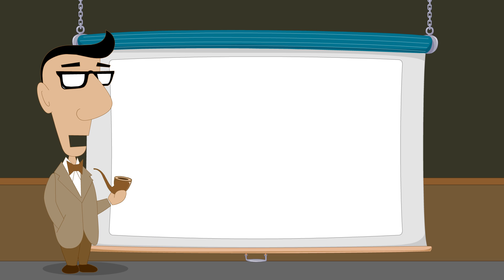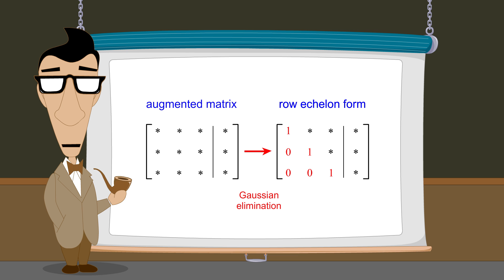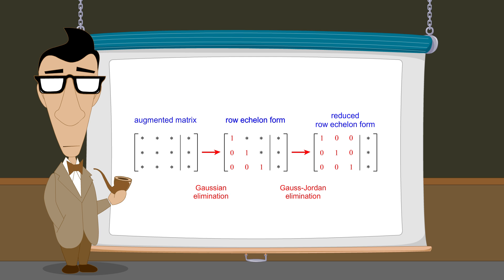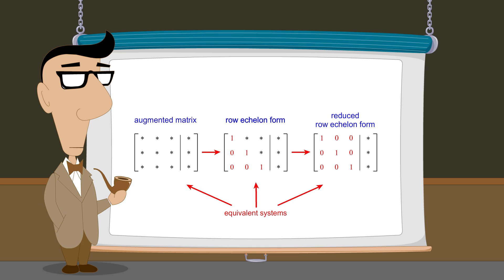So starting with an augmented matrix, we use elementary row operations through Gaussian elimination to reduce the matrix to row echelon form, and then we continue to use elementary row operations through the process of Gauss-Jordan elimination to further reduce the matrix to reduced row echelon form. Since the three elementary row operations — swap, scale, and pivot — change the form of an augmented matrix but not the solutions of the system, both Gaussian elimination and Gauss-Jordan elimination result in systems which are equivalent to the original system of equations.